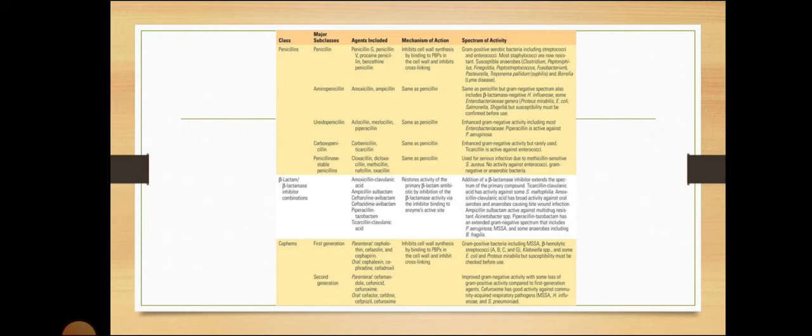Then you have the ureidopenicillins like piperacillin, the carboxypenicillins like carbenicillin and ticarcillin. You have to know about the penicillinase-stable penicillins—cloxacillin, dicloxacillin, methicillin, nafcillin, and oxacillin.